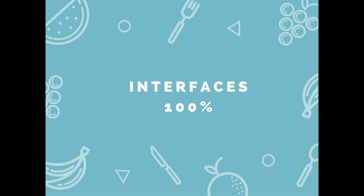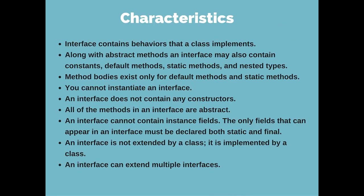Interfaces provide 100% abstraction. Interfaces contain the behavior that a class implements. Along with abstract methods, an interface can also contain constants, default methods, static methods, and nested types. But method bodies can exist only for default and static methods — you can't have method bodies for methods you yourself declare. You cannot instantiate an interface, which means you can't create an object for it, and this is why the interface provides 100% abstraction. Interfaces cannot have non-abstract methods, whereas abstract classes can have both abstract and non-abstract methods, offering 0–100% abstraction.